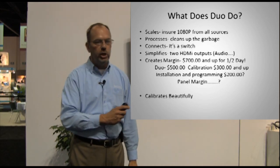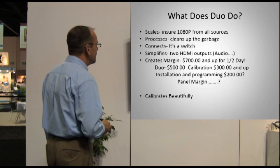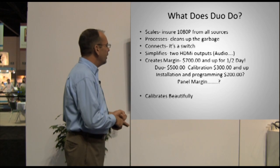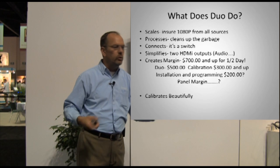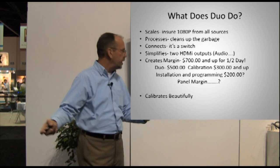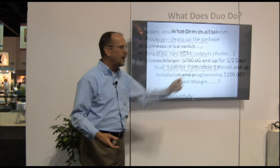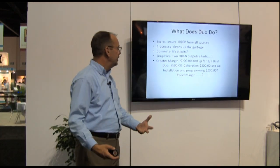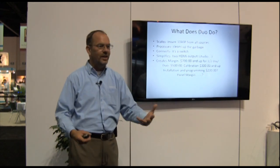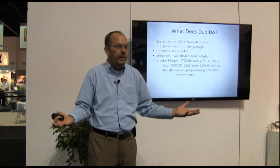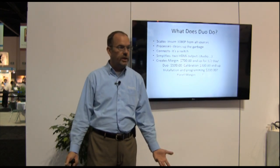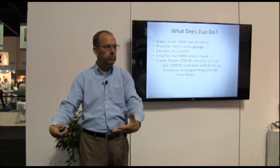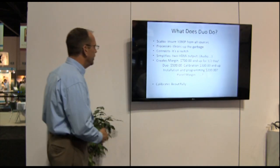Does that sound like something we could use once a week? The Duo carries $500 in margin just on the box. The calibration is going to be charged anywhere from $200 to $350 and up, depending on what you're working on. Installation and programming adds another $200 in labor. Compare that to selling a 70-inch Sharp — you're probably not making $700 on that anymore. So is it a good idea to create a revenue stream attached to video? I have to touch the video anyway, I might as well make some money doing it.